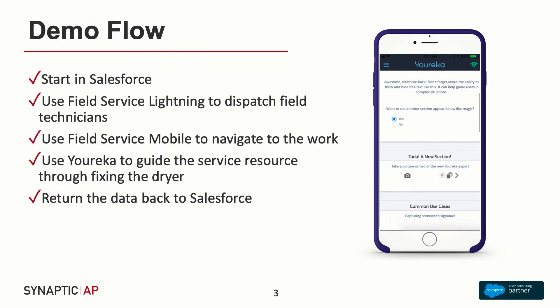Here's what the demo flow looks like. We're going to start inside of Salesforce on the Field Service Lightning dispatcher console. Then we're going to dispatch a work order service appointment out to one of our technicians. Our technician will open up their Field Service mobile application, navigate to the job site where the appliance is broken, and then we'll flip over to the Eureka mobile app to run through the checklist.